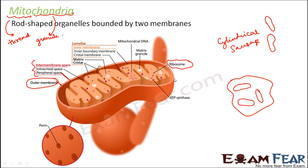Mitochondria are always surrounded by a double membrane — an outer membrane and an inner membrane. Chemically, if you look at the composition of each of these membranes, they are similar to the plasma membrane; that is, these membranes are also made up of lipids and proteins, as are most membranes.